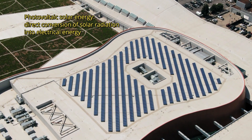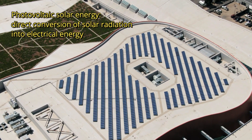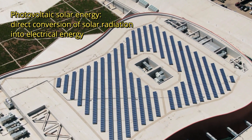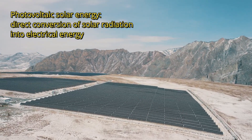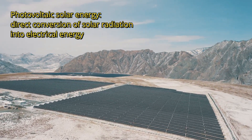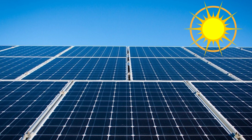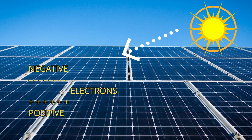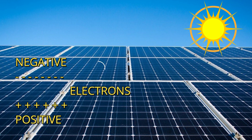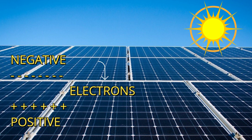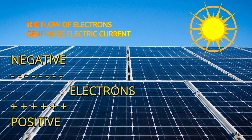Photovoltaic solar energy is the direct conversion of solar radiation into electrical energy. This process is carried out using photovoltaic cells. These cells are made of a semiconductor material, usually silicon. When sunlight falls on the photovoltaic cells, there will be movement of electrons that are transported in this material, being captured by an electric field, which is formed due to a potential difference between the semiconductors. Thus, there will be electricity generation.